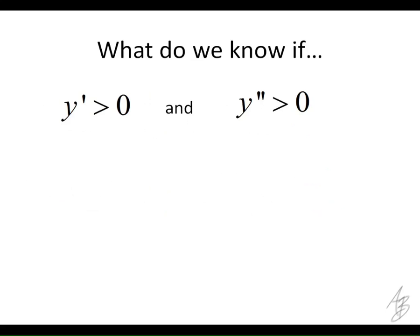Putting it together, if the first derivative is positive we know it's increasing, and if the second derivative is positive we know it's concave up. So the part that is increasing and concave up is what the function will look like — we'll get something that looks like that.